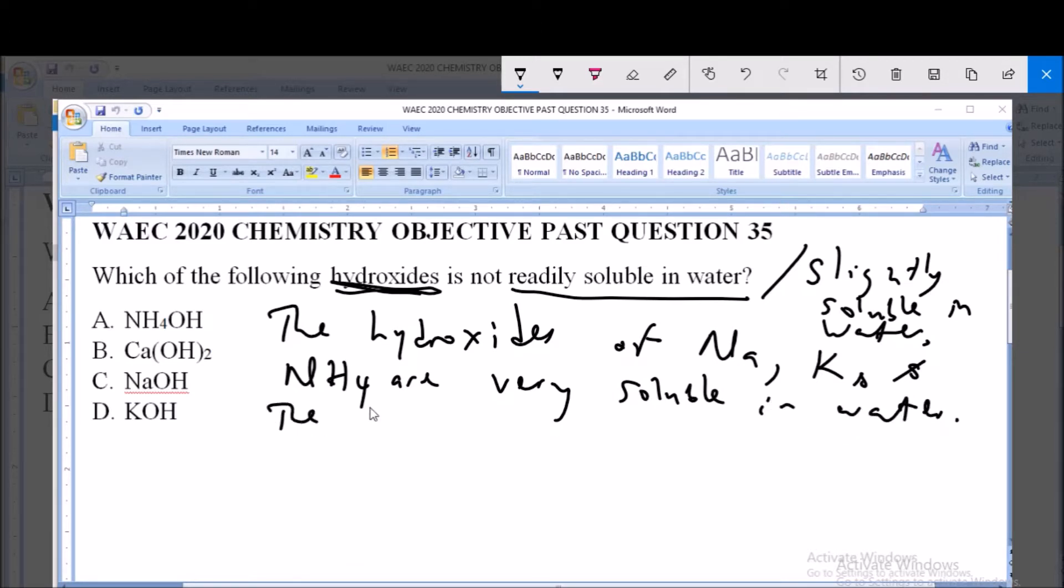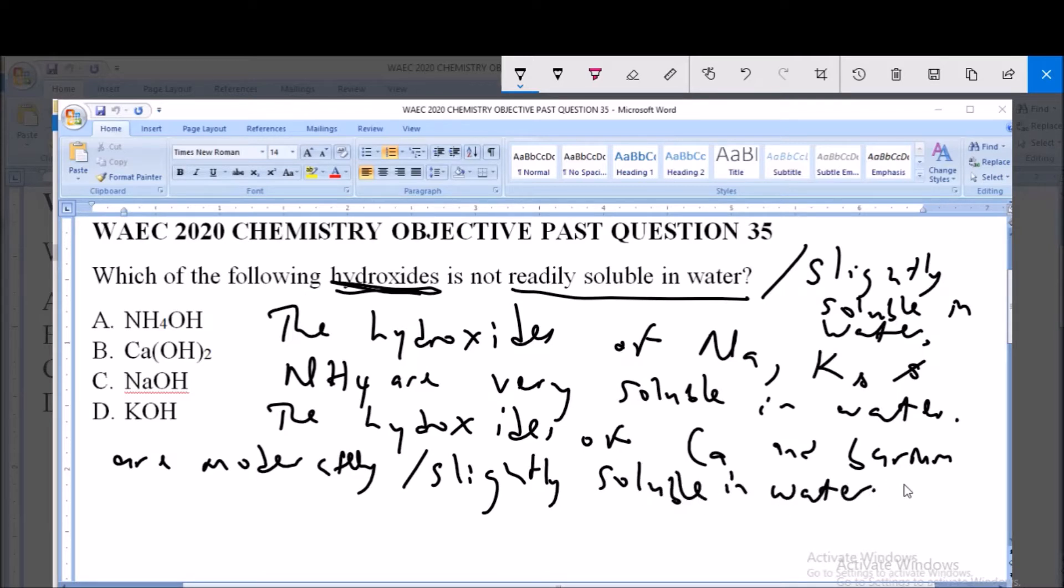Then the hydroxides of calcium and barium are moderately or slightly soluble in water. And then the hydroxides of all other metals are insoluble in water.